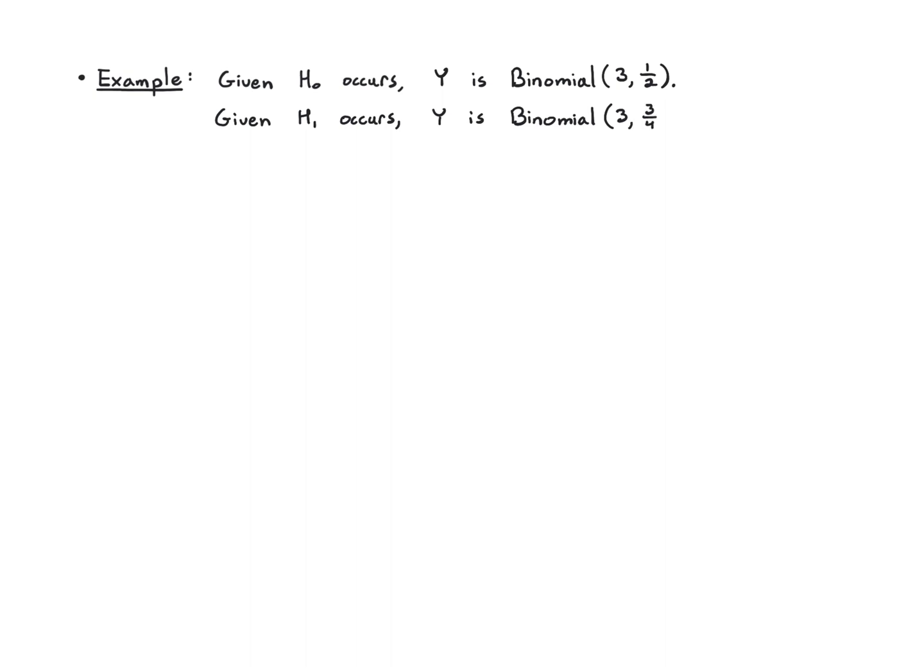Basically success is more likely under H₁. These two conditional distributions for Y could be anything that we wanted. I've picked them in this particular way for this example to keep things very simple. In later videos we'll do more complicated examples, but this allows me to work out all the details very carefully.